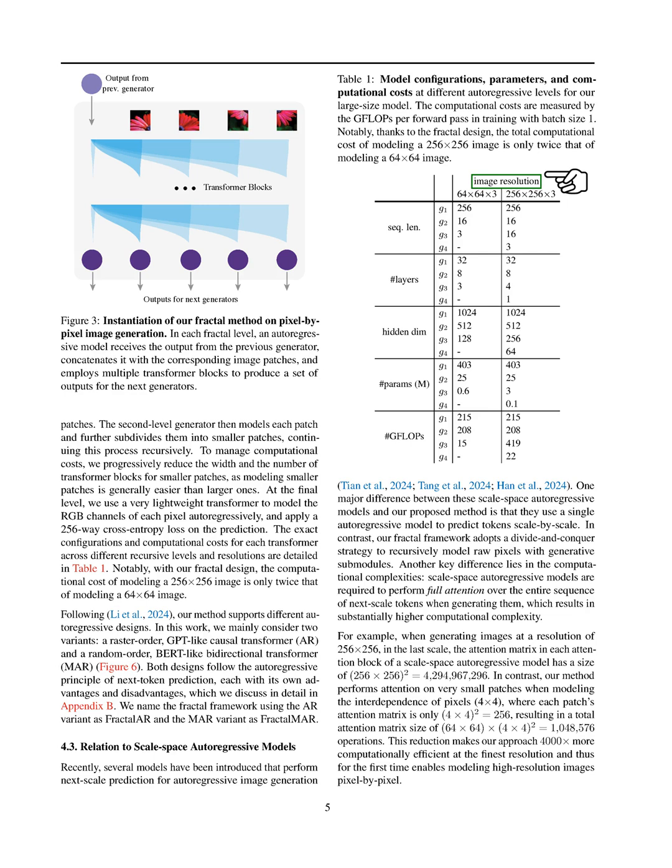Lastly, we differentiate our method from previous long-sequence modeling approaches, which treat pixel-by-pixel generation as a one-dimensional sequence. Instead, we view such data as sets of multiple elements and use a divide-and-conquer strategy to model smaller subsets. This approach is inspired by the near-fractal structure of data, where images consist of sub-images and molecules consist of sub-molecules. Therefore, generative models for this type of data should be composed of generative modules themselves.